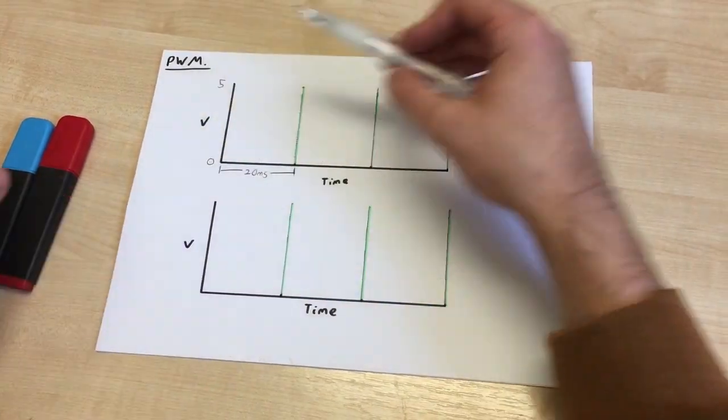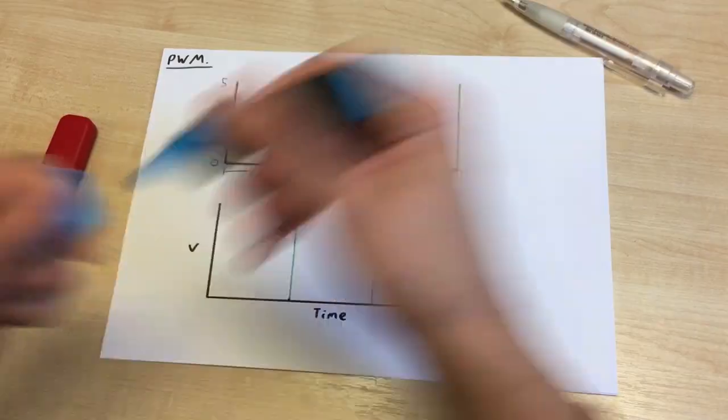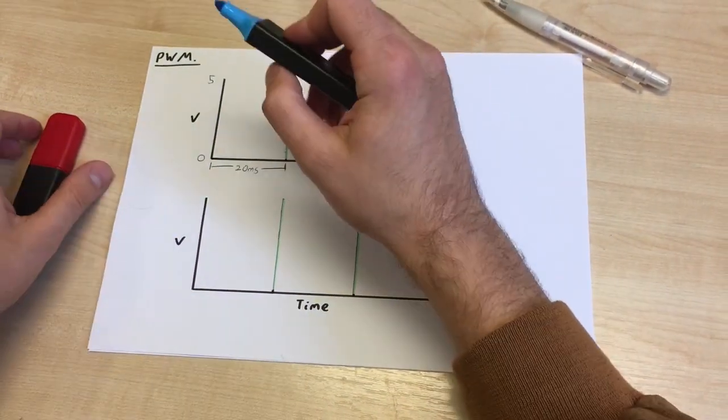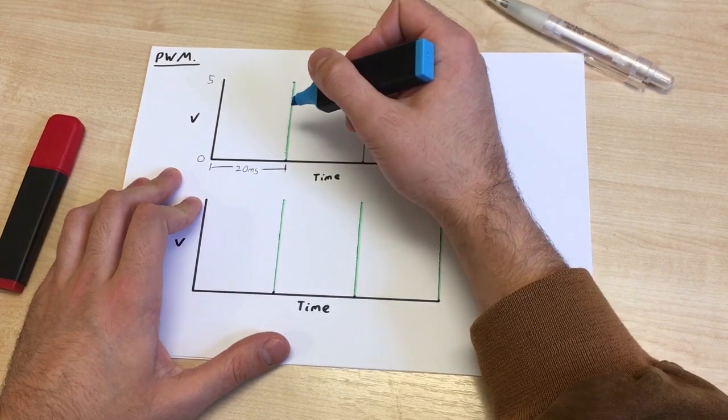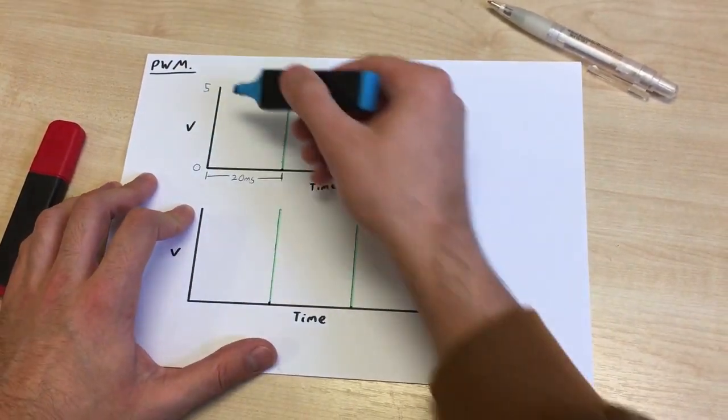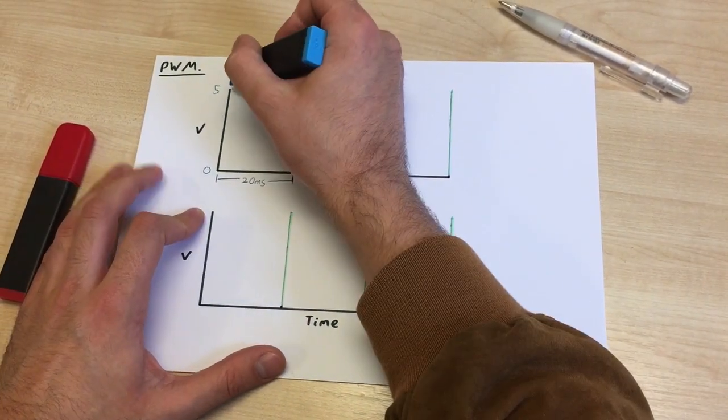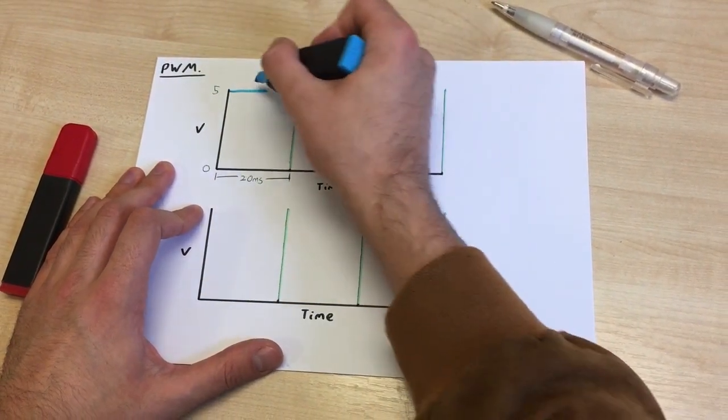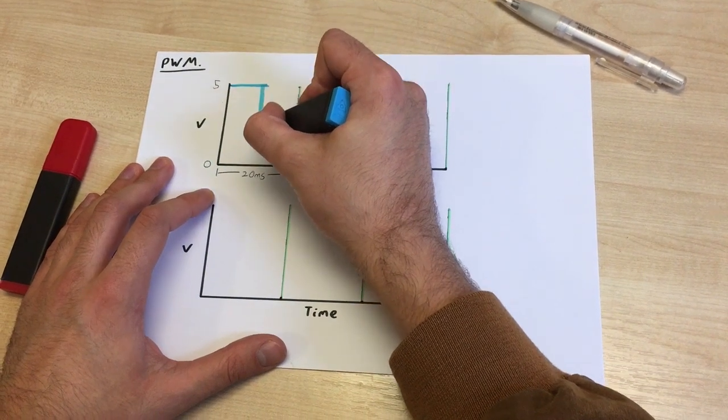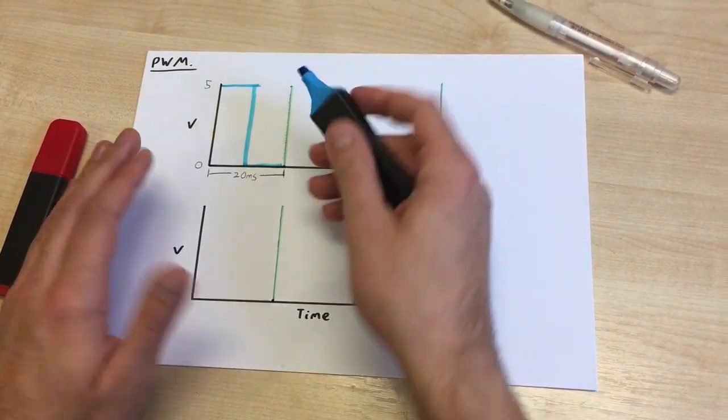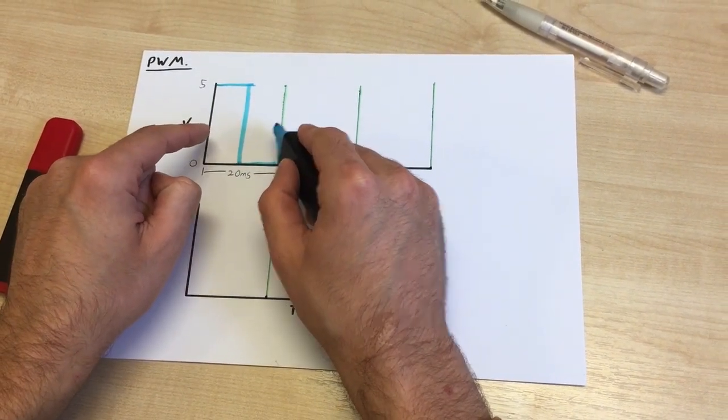So, let's say we want to write 2.5 volts. I'm going to use blue to write the wave cycle. So, what we do is, for one wave cycle, if we wanted to write 2.5 volts, which is half the max voltage, what we would do is we'd turn the digital pin on for half the time, and then we'd turn it off, and then we'd leave it off for half the time. And what it does is, because this is such a small period of time, because this is 20 milliseconds, it's so quick,